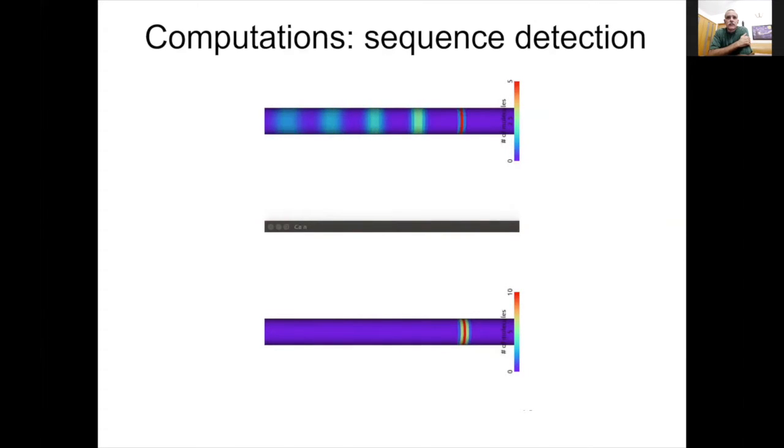What else can you do with this? Here's a computation that we're very interested in. Supposing you had an input propagating along the length of a dendrite, a sequence of inputs. This could trigger activity in successive regions, successive spines. Can we detect the sequence going in one direction or another?